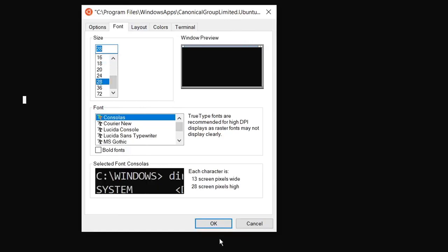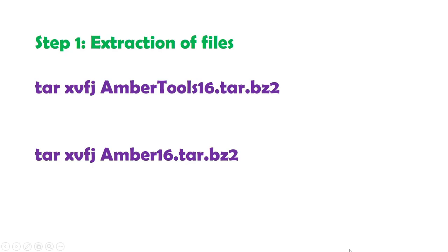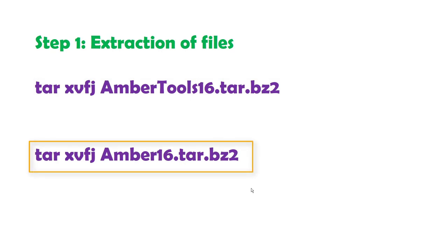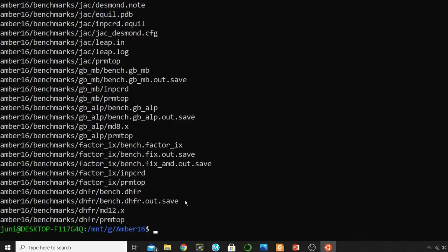The first step is the extraction of files. We will use two commands. The first one is: tar xvfj AmberTools16.tar.bz2, and the second command is: tar xvfj amber16.tar.bz2. The first step takes about 15 to 20 minutes and this step will also take the same time, so I will pause the recording and come back when it's completed.